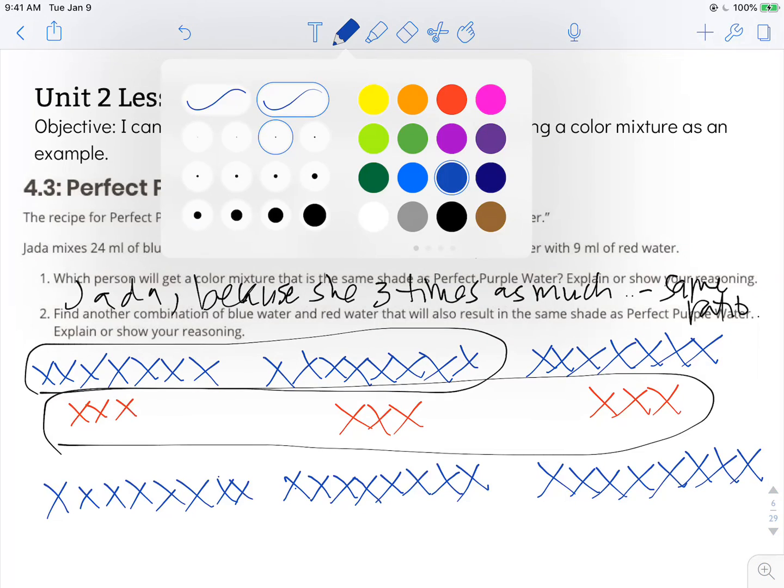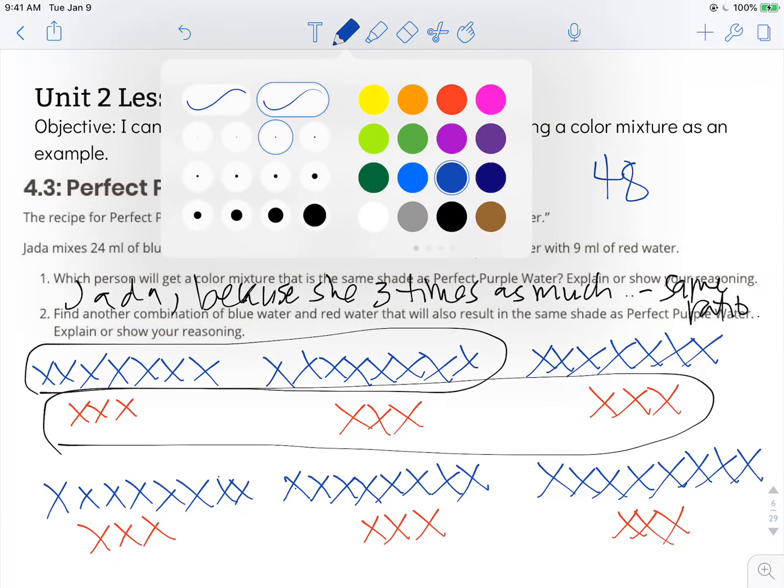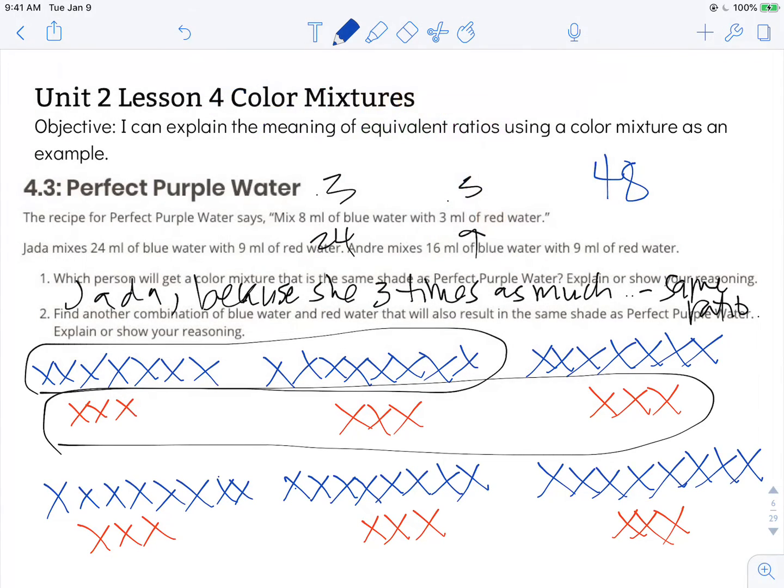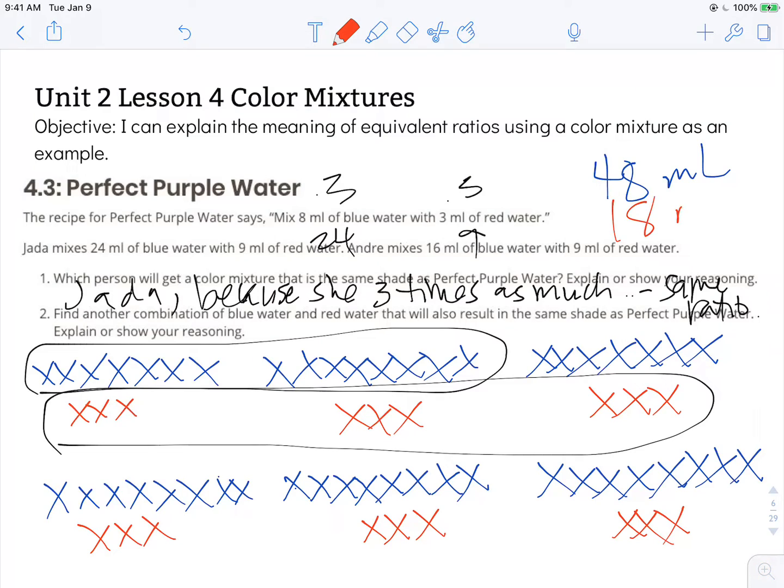we would get twice as much as what Jada made. Which means we would have a total of 48 milliliters of blue. Oh, let's write milliliters as well. And three, six, nine, 18 milliliters of red.